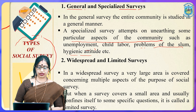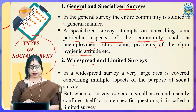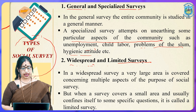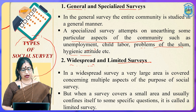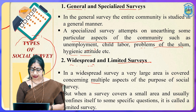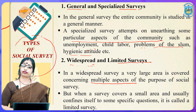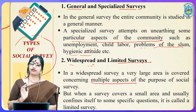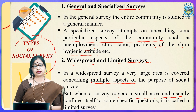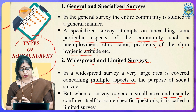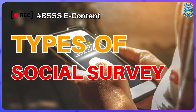The next category is widespread and limited surveys. In a widespread survey, a very large area is covered concerning multiple aspects of the social survey's purpose. When a survey covers a small area and usually confines itself to some specific questions, it is called a limited survey.